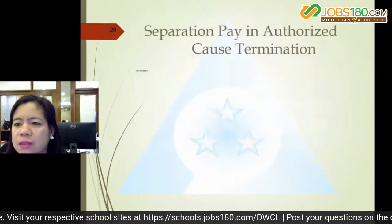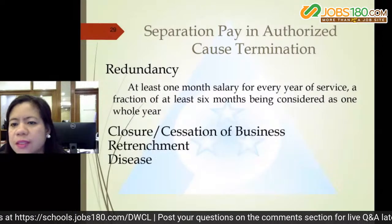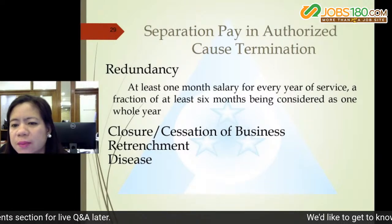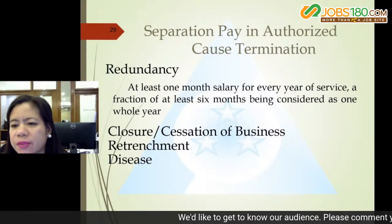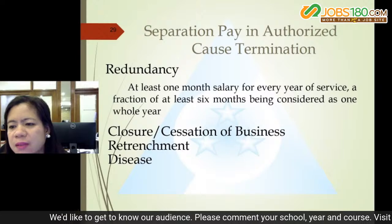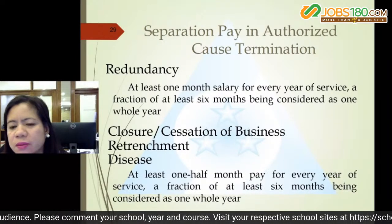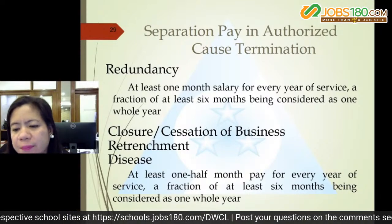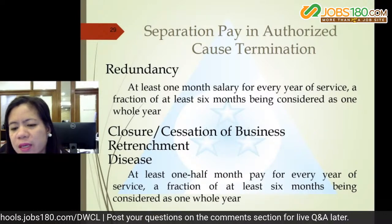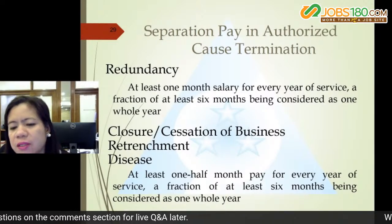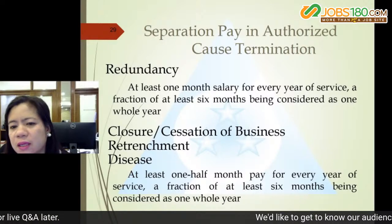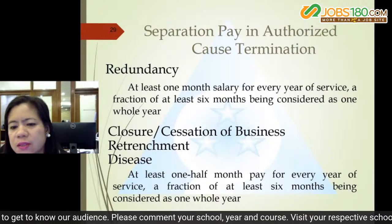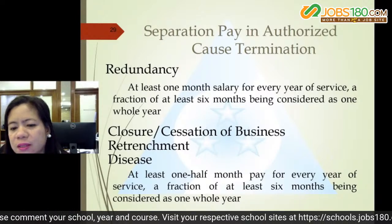Just cause refers to wrongdoing committed by the employee, such as serious misconduct, gross and habitual neglect of duty, fraud or willful breach of trust, loss of confidence, commission of a crime, or other analogous cases. Authorized cause refers to causes brought about by changing economic or business conditions, such as redundancy, retrenchment to prevent losses, cessation or closure of business, or disease. For redundancy, separation pay is at least one month salary per year of service. For closure, retrenchment, or disease, it is at least one-half month pay per year of service, with a fraction of at least six months considered as one whole year.